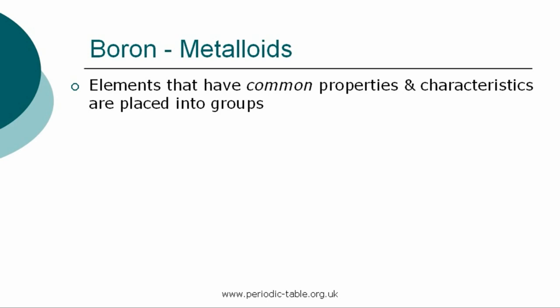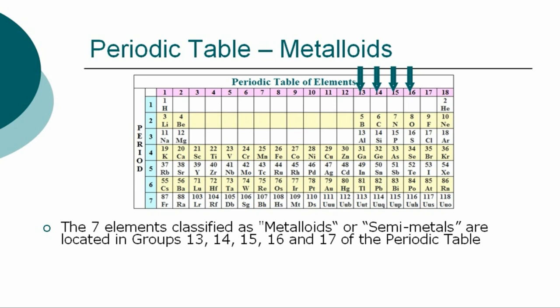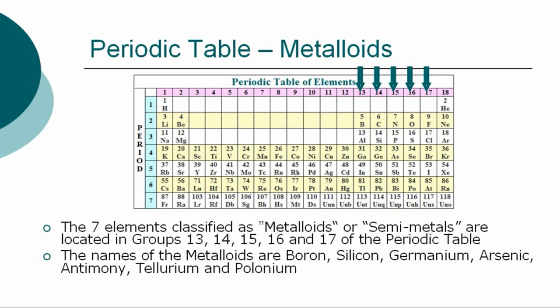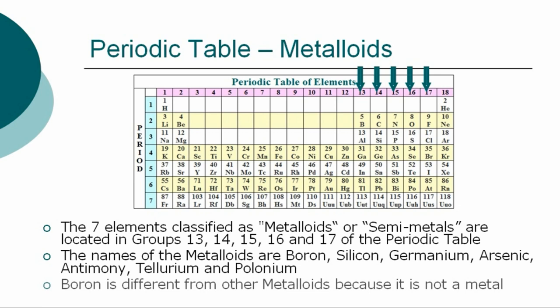Once the properties of an individual element have been identified, it is placed into a group of elements which have common properties and characteristics. Boron is in the group called the metalloids. The seven elements classified as metalloids or semi-metals are located in groups 13 to 17 of the periodic table. The names of the metalloids are boron, silicon, germanium, arsenic, antimony, tellurium, and polonium.